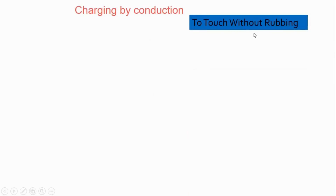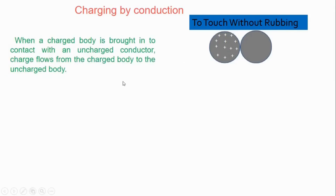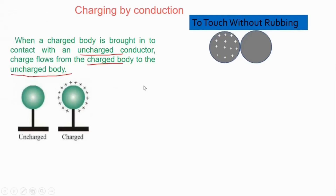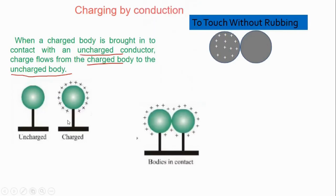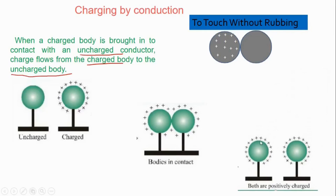The next and last method of charging is charging by conduction. The difference between conduction and induction is that in conduction the two objects are in physical contact but not rubbing. The key word here is that they are just in touch. In induction they are not in touch. When a charged body is brought in contact with an uncharged conductor, charge flows from the charged body to the uncharged body. If we have a positively charged body and bring another uncharged body into contact, there is a redistribution of charges, and when separated, both bodies become positively charged. In conduction, the body can be charged with the same sign, whereas in induction the bodies are charged with the opposite nature of charges.